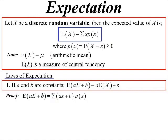And I can prove this quite easily. We'll go back to our definition. So the expected value of aX + b would be the sum of—well, instead of having x, I've now got aX + b—so the sum of (aX + b) times the probability of x.